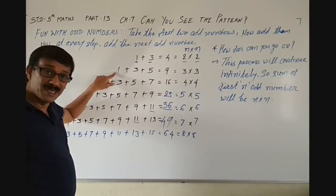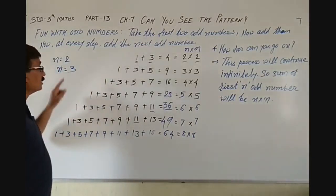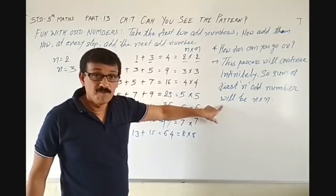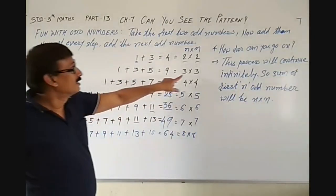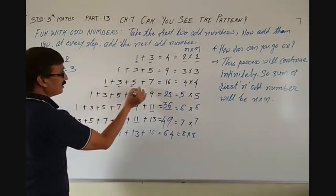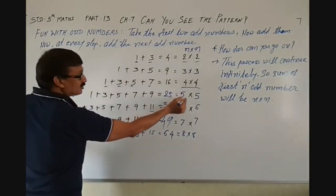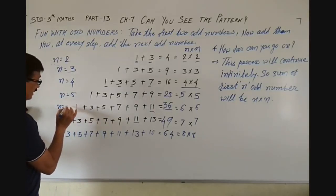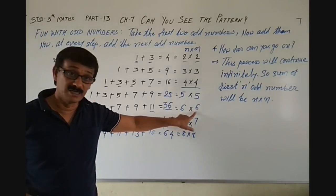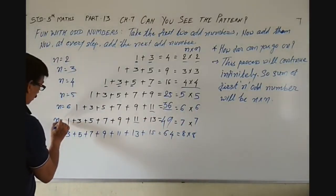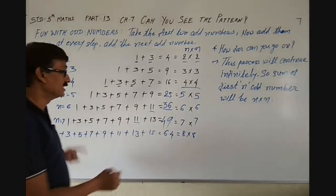In this row, how many odd numbers are there? 1, 2, 3 — so N is equal to 3, and the sum will be 9, that is 3 multiplied by 3. If we count 1, 2, 3, 4 — N is equal to 4, so it is 4 multiplied by 4. Here N is equal to 5. Here N is equal to 6, the total is 36, which is 6 multiplied by 6. Here N is equal to 7 — 7 odd numbers — so it is 7 multiplied by 7.